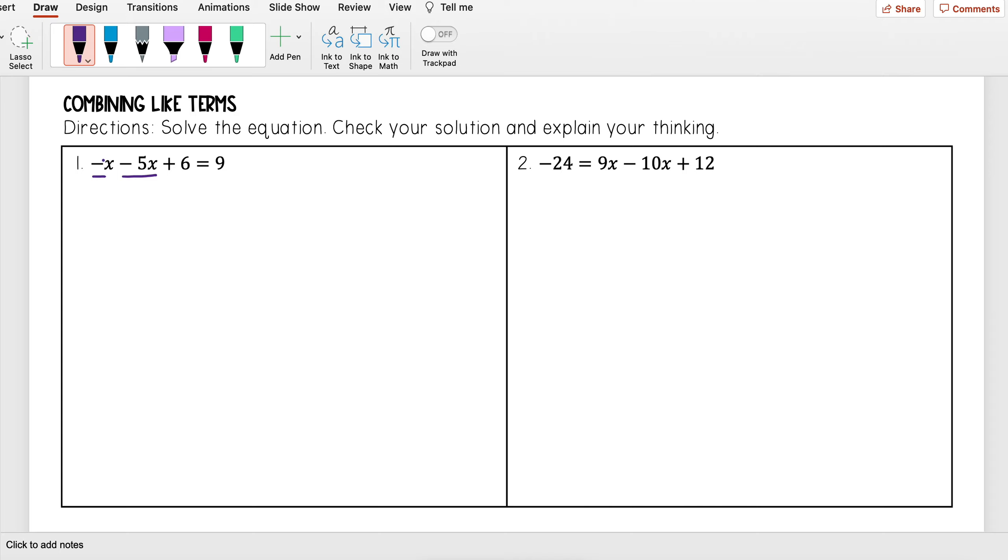When I combine those, I have negative, this is really negative 1x minus 5, and I get negative 6x plus 6 is equal to 9.